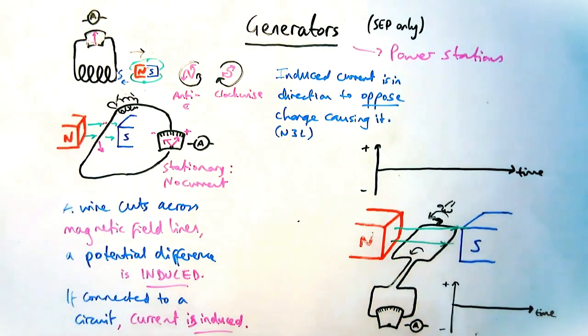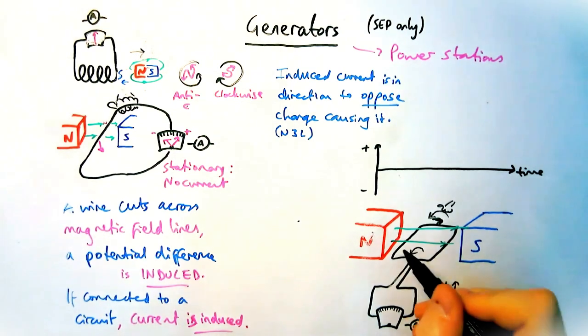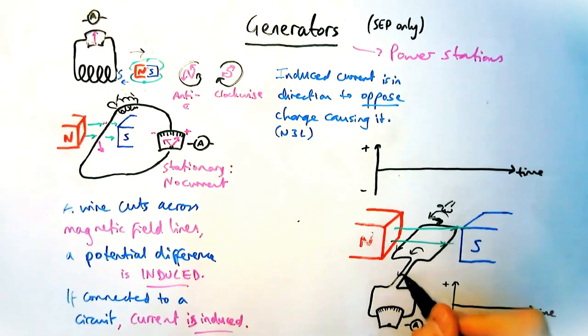Now, the reason being is because you're moving a conductor through a magnetic field or across magnetic field lines in exactly the same definition we talked about earlier. So the current will be induced in a certain direction.